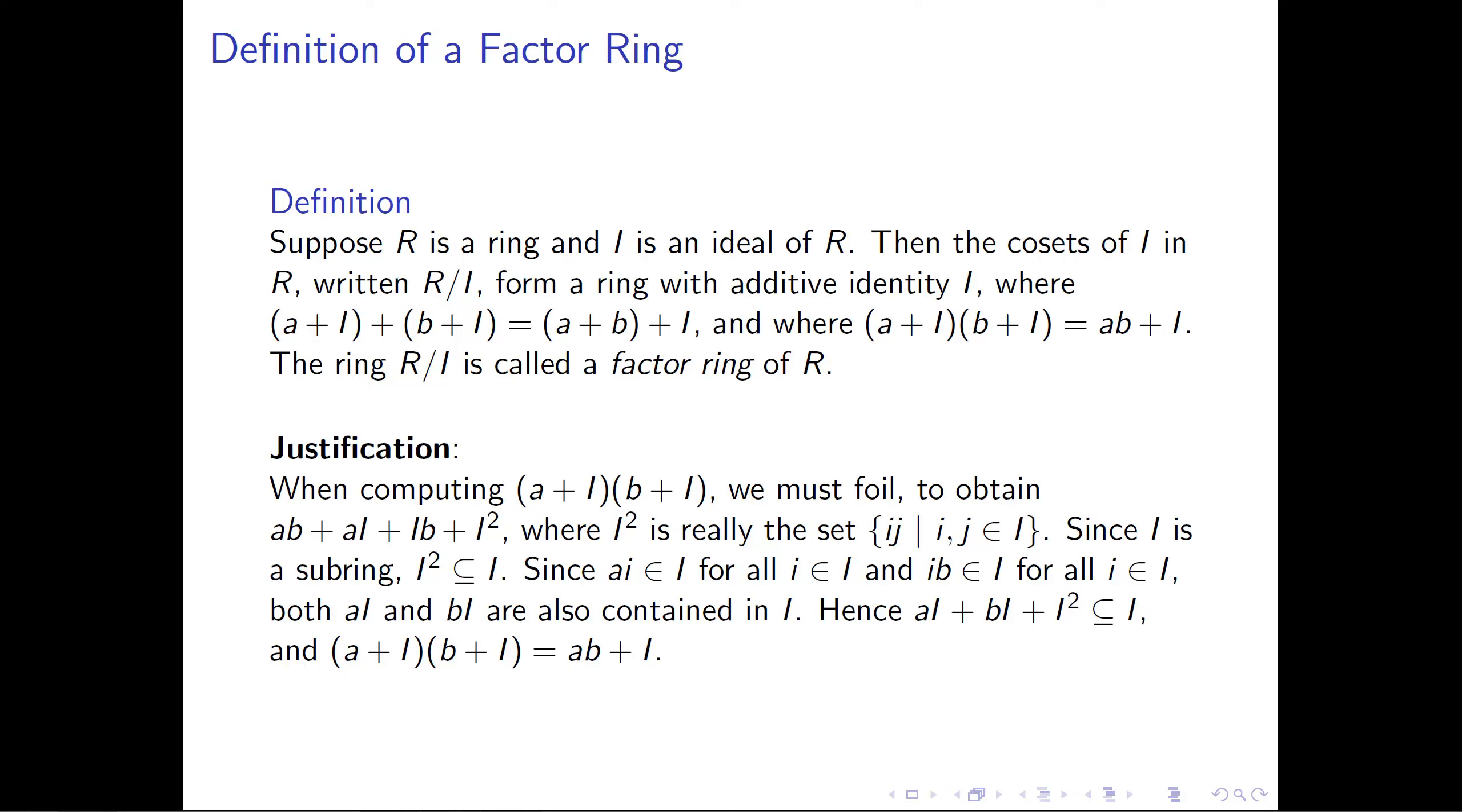However, since I is a subring, we're taking I², which is an element of I and another element of I, and we're multiplying them together. So what we're getting is another element of I. So this set I² is a subset of the set I.